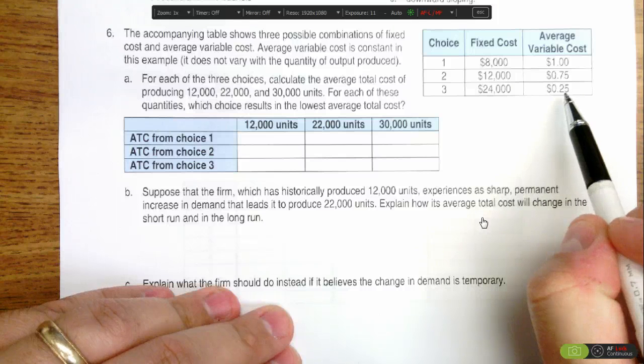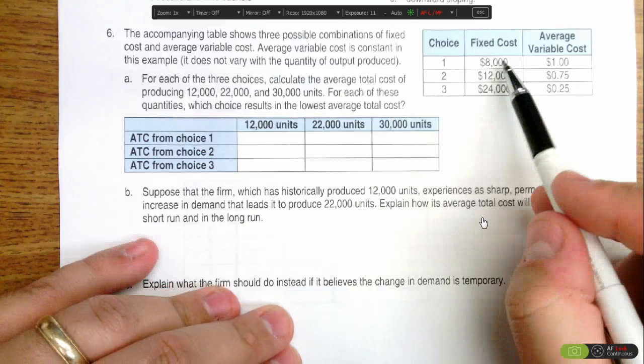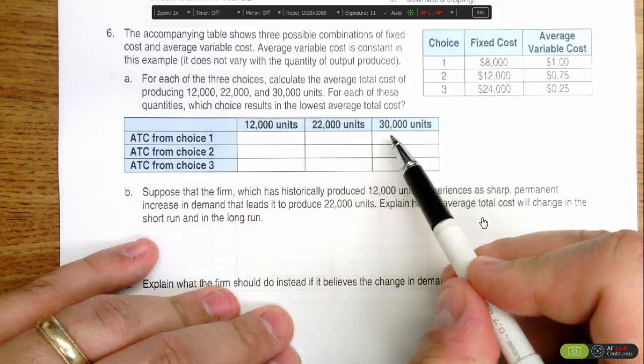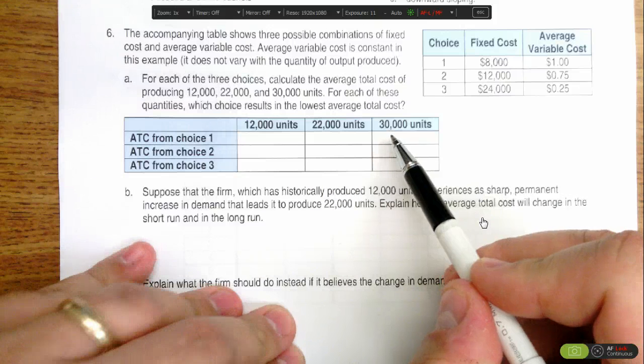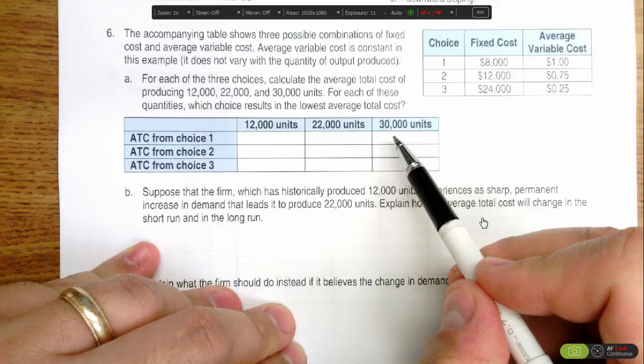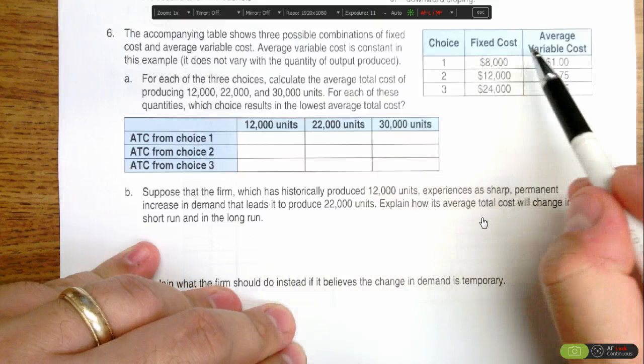So we need to figure out what our average total cost is for choice one depending on whether we're making 12,000, 22,000, or 30,000 units, and then repeat for each of the other two options. To do that, we need to figure out our total cost and then divide by units. Total cost is equal to fixed cost plus variable cost.